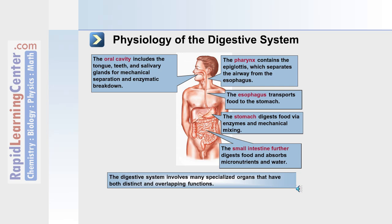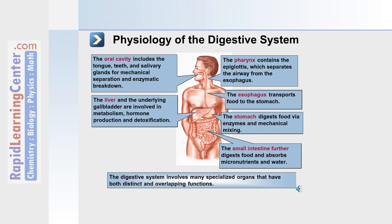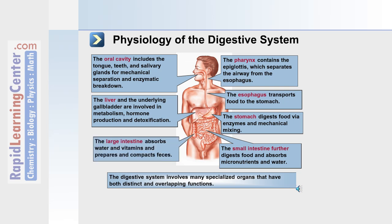The small intestine further digests and absorbs water and micronutrients. The liver and the underlying gallbladder are involved in metabolism, specifically of fats, as well as hormone production and detoxification. The large intestine is primarily responsible for the absorption of water, vitamins, and the preparation and compaction of feces.